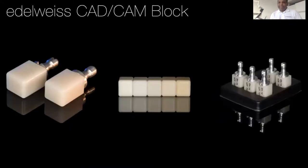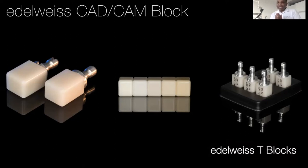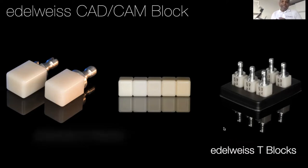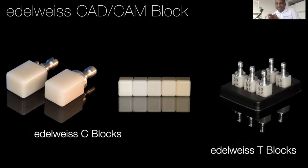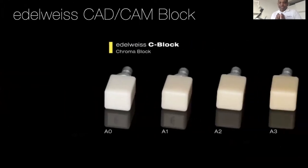The Edelweiss T block, on your right-hand side, is the extremely translucent block resembling natural enamel. Whereas the C blocks are the high chroma blocks ranging from Vita shades A0 to A3. For ease of use and color matching, the chroma blocks can be used ranging from A0 to A3 — the dentist simply chooses the appropriate shade and selects the matching Edelweiss CAD CAM block.